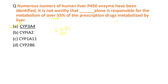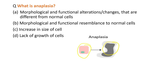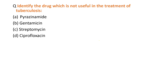The next MCQ: what is anaplasia? Anaplasia refers to the morphological and functional changes occurring in a normal cell — meaning our normal cells undergo morphological changes. This is the definition of anaplasia.